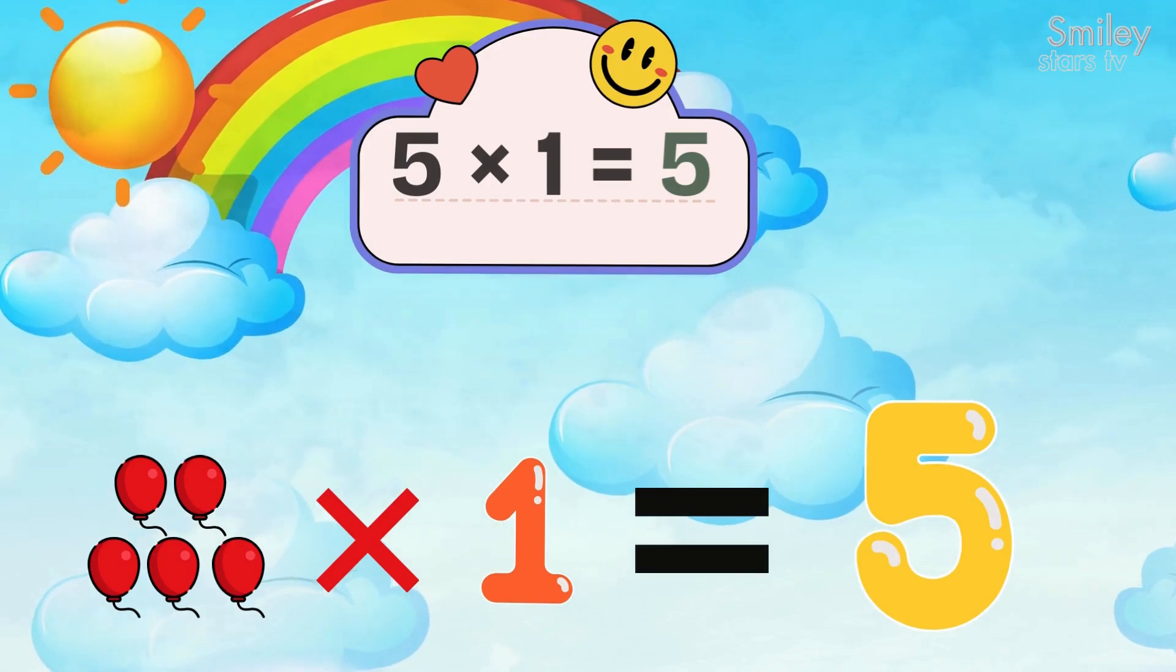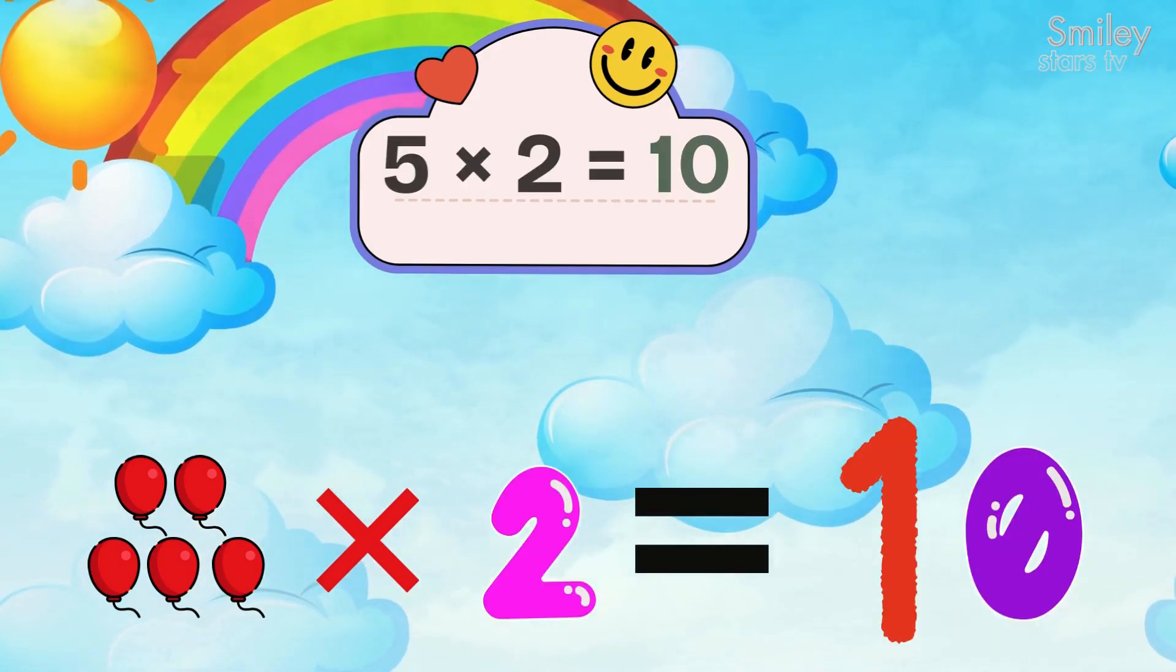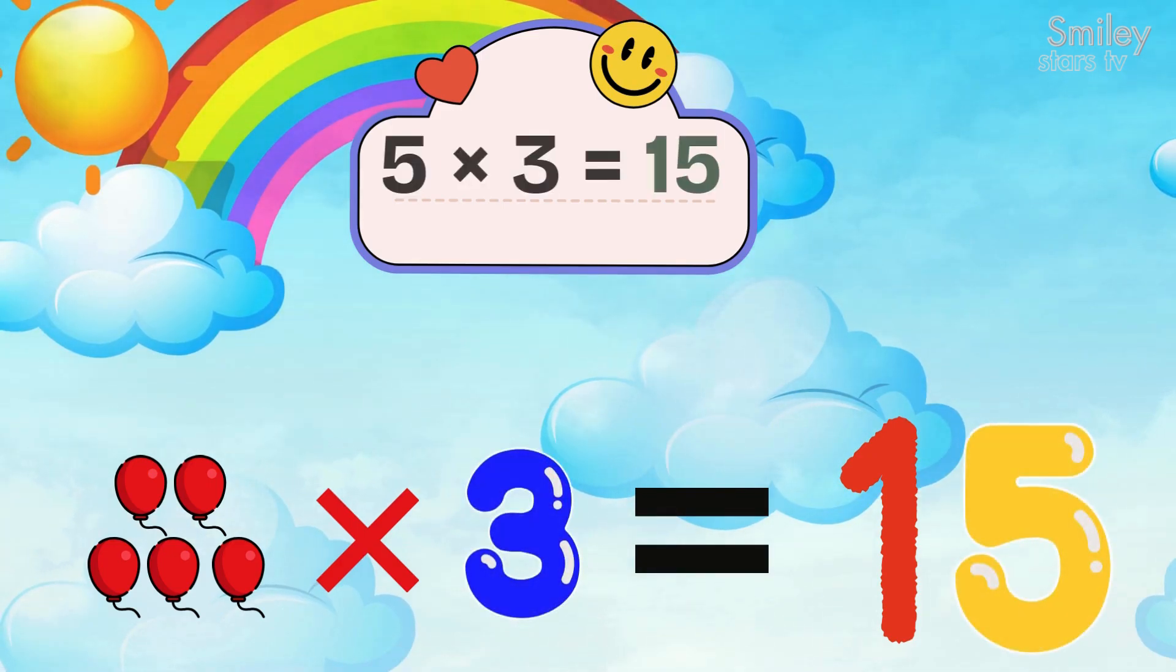Five ones are five. Five twos are ten. Again. Five threes are fifteen. Let's count to the end.